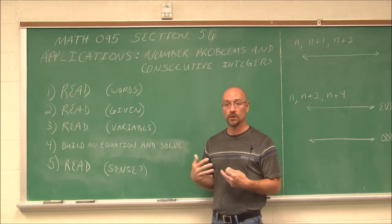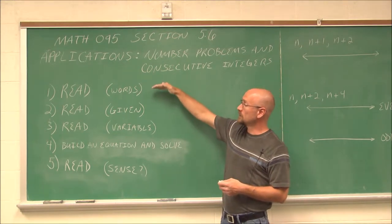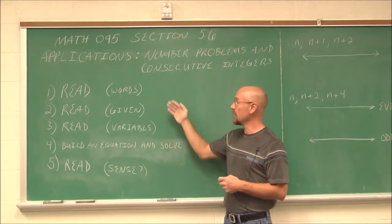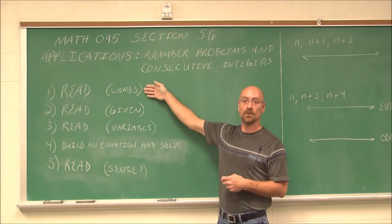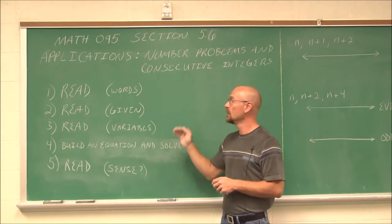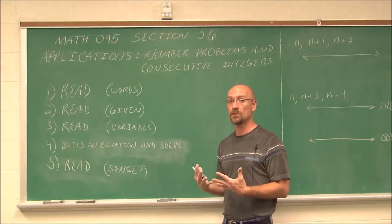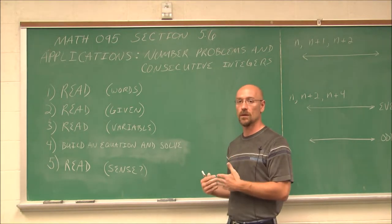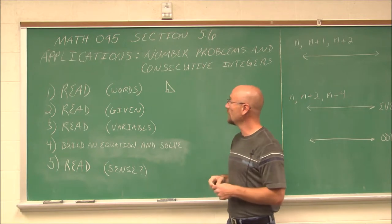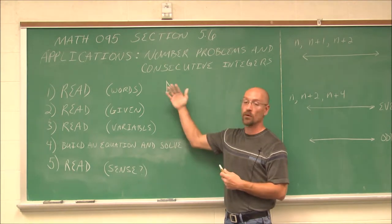There are strategies when doing application problems — some people call them story problems. The first strategy is to read the problem and understand the words. The first time you read it, that should be your one and only goal: do I understand the words? For example, if it gives you a term like 'right triangle,' you need to know that's a triangle with one angle of 90 degrees before you can move on.